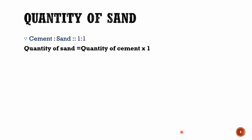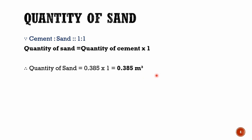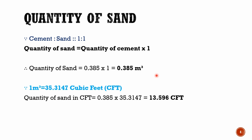Since cement and sand are in the ratio of 1:1, the quantity of sand is equal to the quantity of cement. Therefore, quantity of sand equals to 0.385 multiplied by 1, which equals 0.385 cubic meter. Sand is also measured in cubic feet and tons, so let's convert the cubic meter volume into cubic feet. Since 1 cubic meter equals 35.3147 cubic feet, multiply the cubic meter volume with 35.3147. Therefore, quantity of sand in CFT equals to 0.385 multiplied by 35.3147, which equals 13.596 cubic feet.